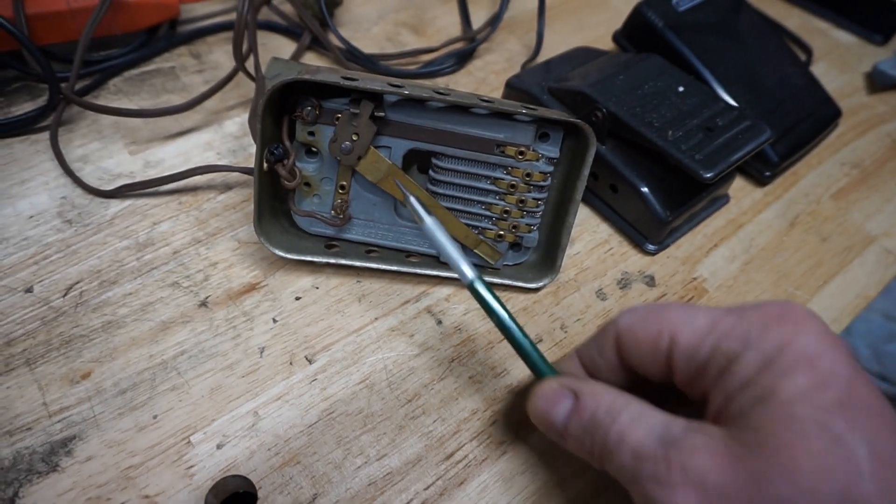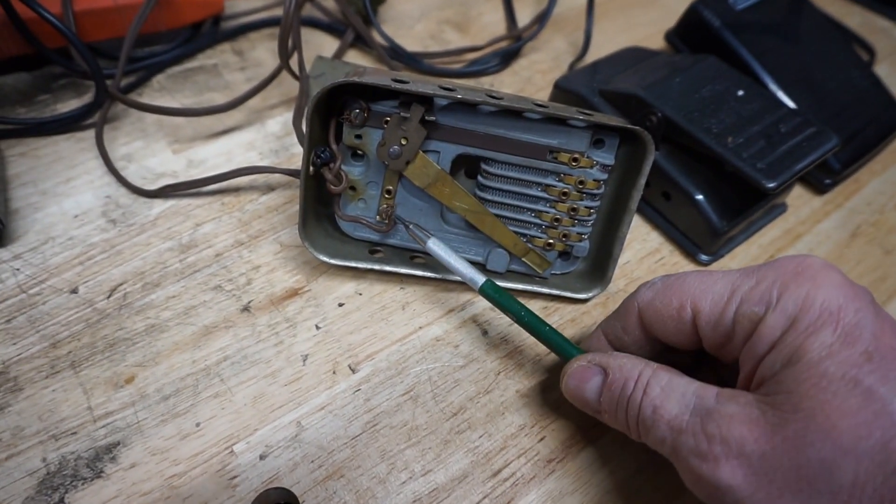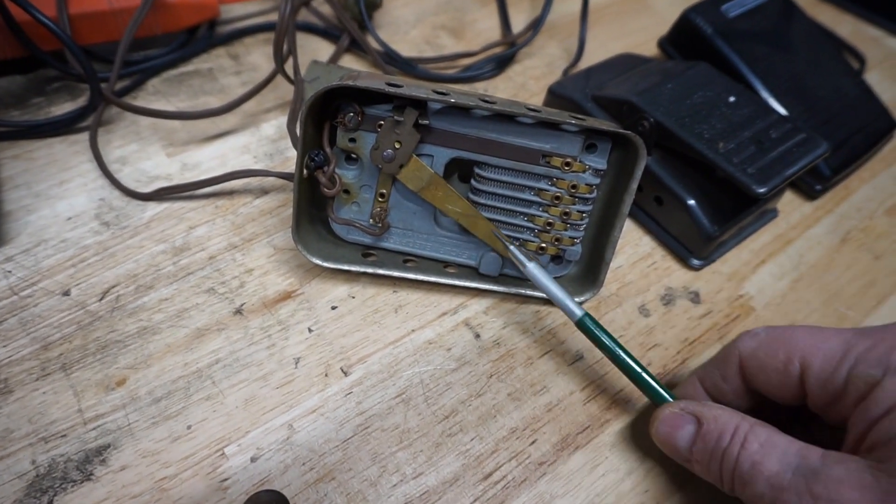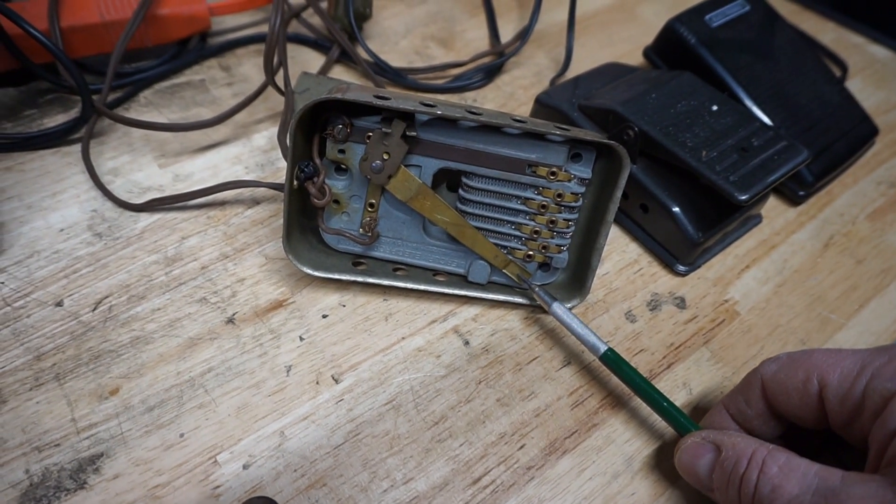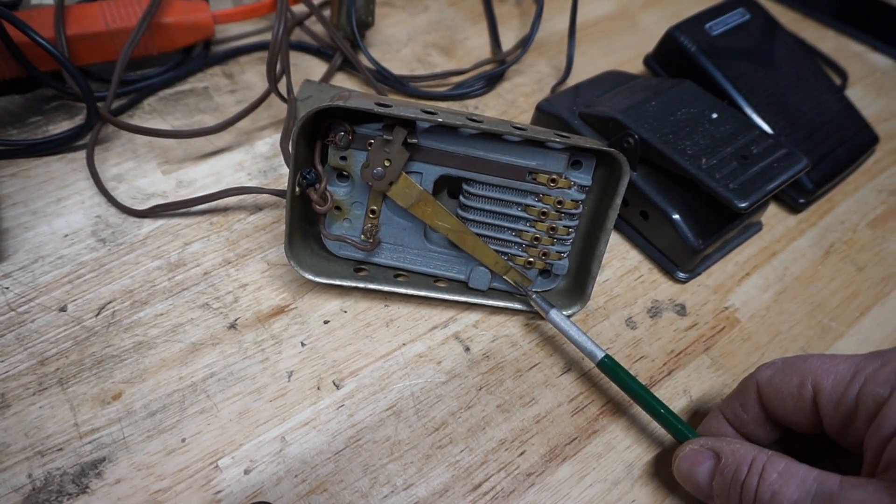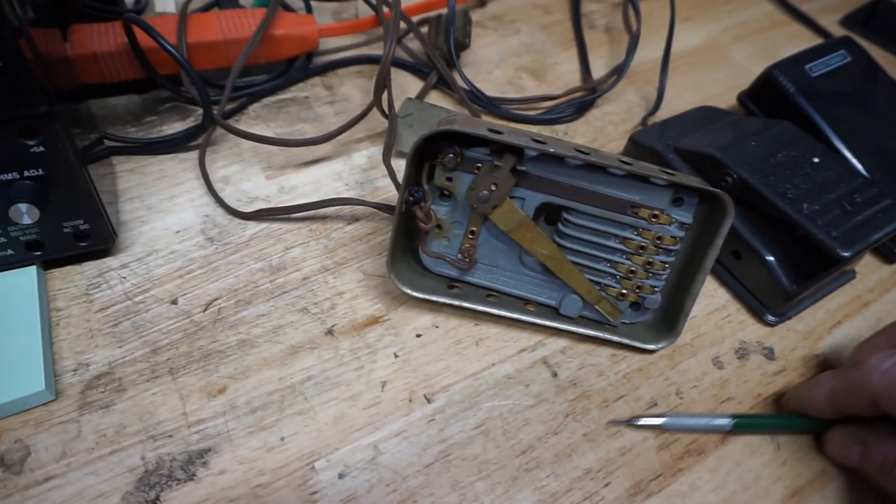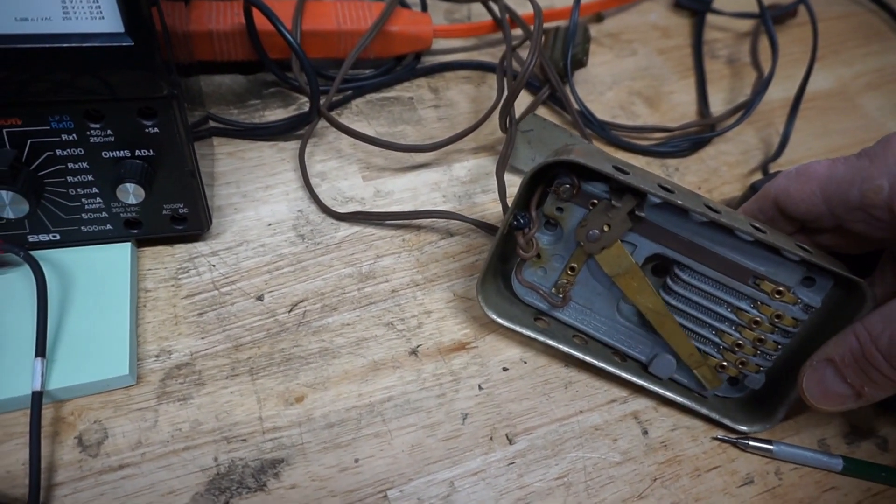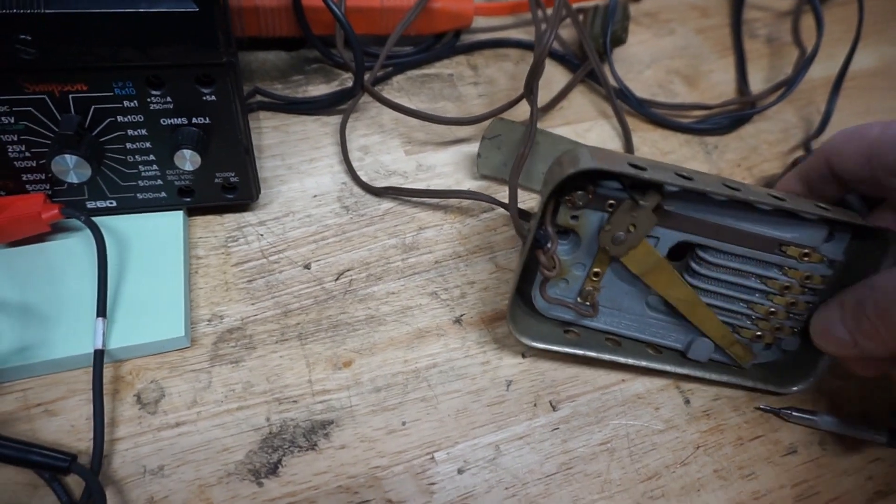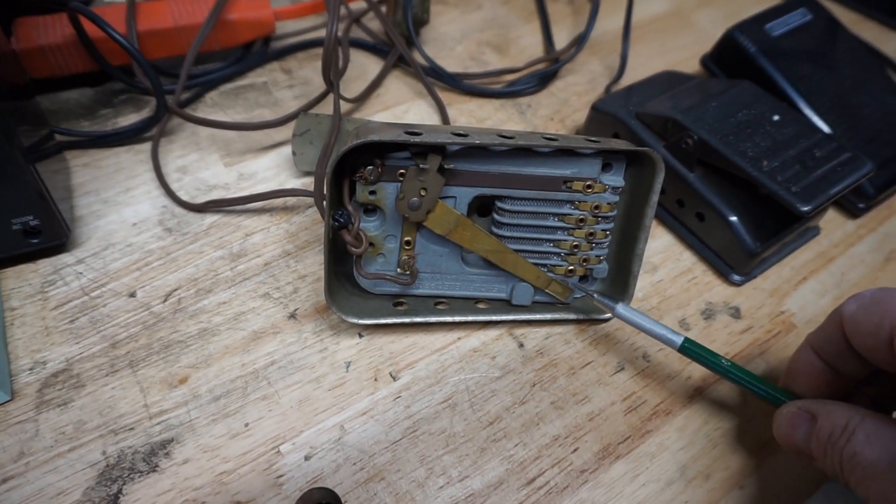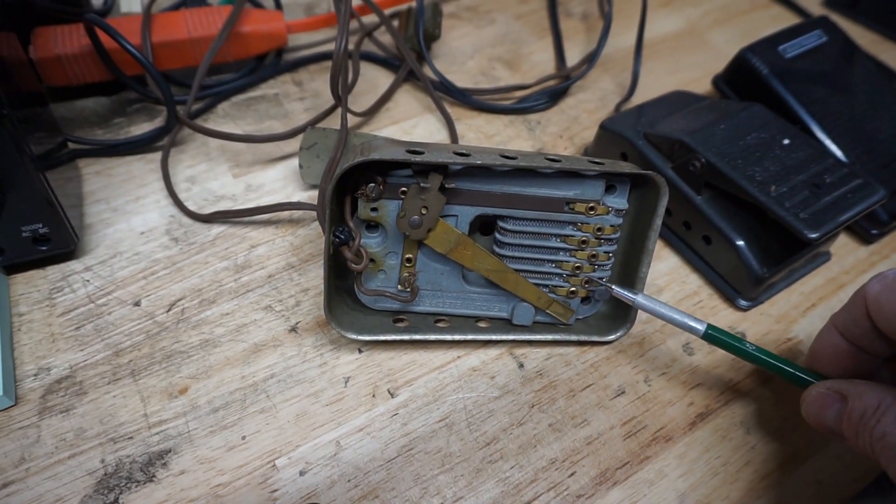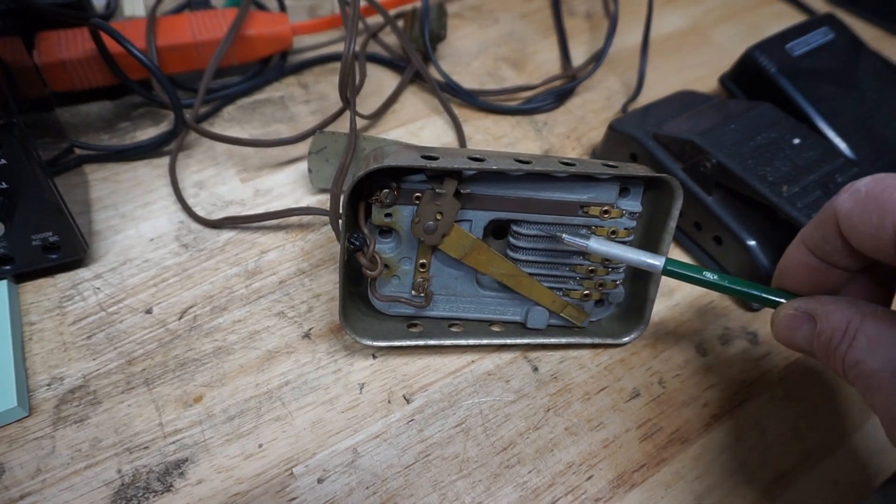And when you plug it in, this whole bar from here to here and all of this is 120 volts AC, and if you touch it you will get a shock. And as you step on the pedal, the arm moves across these resistors, and as it makes contact with each one, these coils get shorter and shorter and shorter.